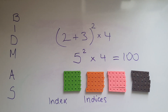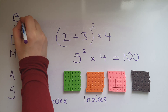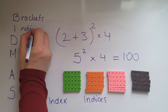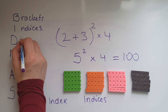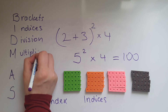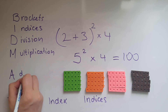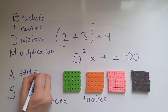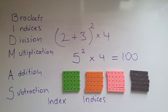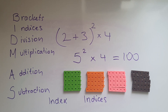So what we have created here is an acronym: BIDMAS — Brackets, Indices, Division, Multiplication, Addition, Subtraction. This is an easy-to-remember word, BIDMAS or BODMAS. It represents the order of operations.